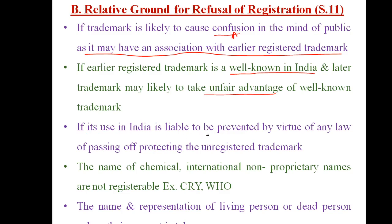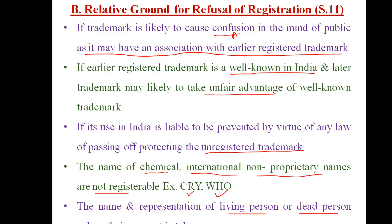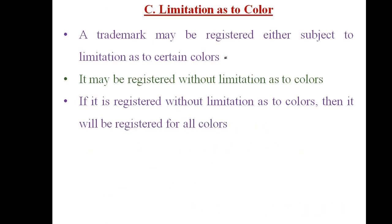If a trademark used in India is liable to be prevented by virtue of law of passing off — protecting the unregistered trademark — then such trademarks cannot be registered. Any trademark restricted from registration, any prohibited symbols, the name of chemical international non-proprietary names are not registrable. Also, the name and representation of a living or dead person — without their consent, you cannot register the name of a person whether living or dead. On consent, one can allow others to register his name as a trademark.